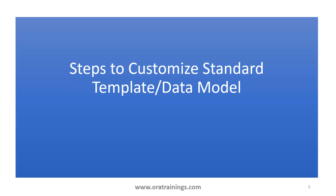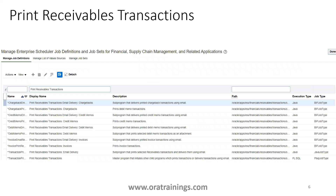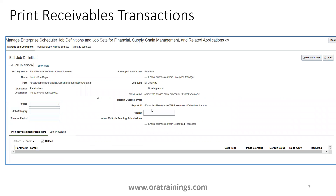Now let us see the customization steps. In our example today, we want to consider a standard report called Print Receivable Transaction. First, we have to know what the ESS job and BI report behind it are. Search using the task called Manage Enterprise Scheduler Job Definition for Financial Supply Chain Management, search for 'receivable transaction', and check Print Receivable Transaction. The report ID belongs to Print Receivables Bill Presentment Default Invoice dot XDO.